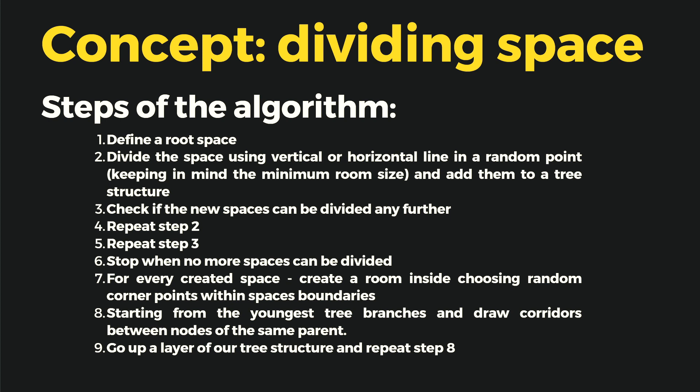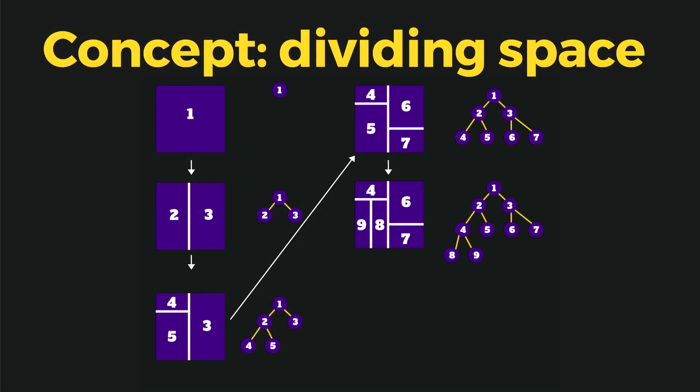So let's try to understand each step of this algorithm. We have a space numbered one, we divide it into two and three, and we set space one as their parent.